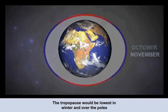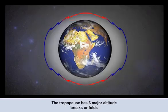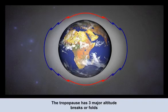It follows that when the troposphere is at its coolest — over the poles in winter — then the tropopause would be at its lowest. However, there are places where the tropopause folds or breaks. This is where we find a significant difference in temperature in the troposphere, and therefore a significant tropopause altitude change.